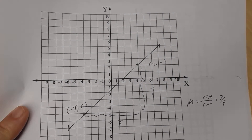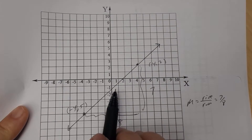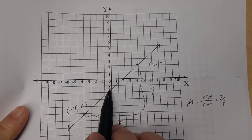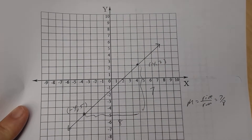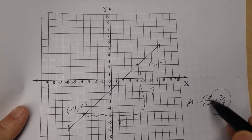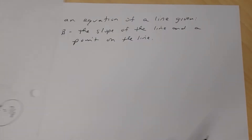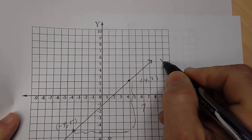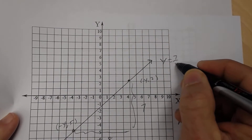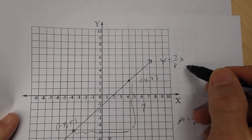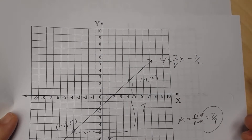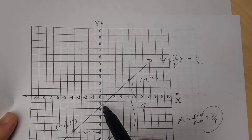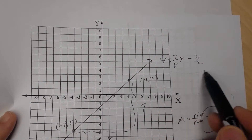The slope is seven-eighths and I have a point on the graph. But I can't use slope-intercept form because I don't know what the y-intercept is exactly. I can estimate, but you don't want to estimate — you want to find the exact y-intercept. Given the slope and a point on the graph, which is what this lesson is about, you want to write the equation of this line. It turns out the y-intercept is negative three-halves, which is negative one and a half.